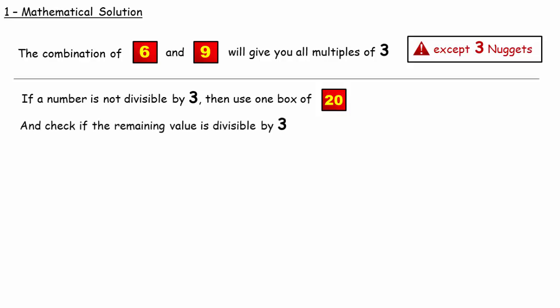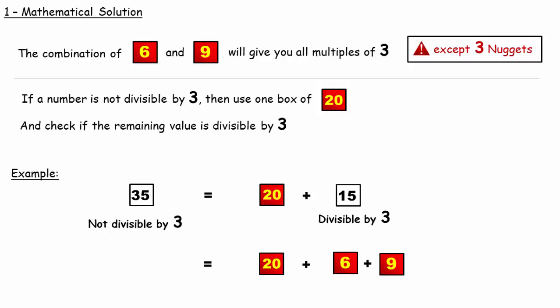For example, if you want to buy 35 nuggets. 35 is not divisible by 3. So use a box of 20 and the remaining 15 can be achieved using a combination of 6 and 9. So 35 is possible to buy.